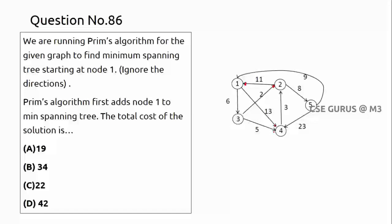So I am ignoring all directions. That means there is an edge 2 to 5 as well as 5 to 2 with the same cost; 1 to 2 and 2 to 1 is 11; 5 to 1 and 1 to 5 with 9 — like this we have everything. Prim's algorithm first adds node 1; it is asking to start from node 1 and find the minimum spanning tree total cost.